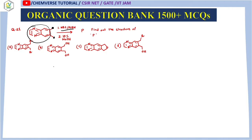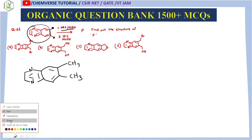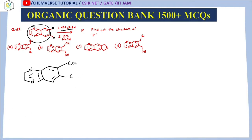Since NBS is given in the presence of AIBN, bromination will occur at those benzylic positions. If I draw the structure again — initially there was CH₃ and CH₃ — now bromination occurs, giving CH₂Br and CH₂Br. This dibromination is what happens in the first step. Before moving to the second step, let's take a brief look at the mechanism of this kind of reaction.